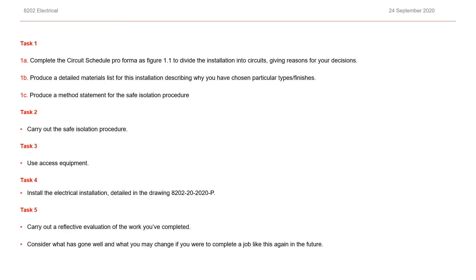With this level 2 synoptic assessment, candidates would be required to carry out five tasks. Task one would involve them completing a circuit schedule pro forma and dividing the installation into circuits based on the plan, giving reasons for their decisions. The design will be based on tables in the On-Site Guide, and then they would need to produce a detailed materials list describing why they have chosen particular types and finishes.